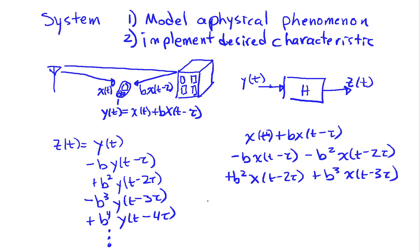And then when we have the b cubed term, we're going to have minus b cubed x of t minus 3 tau, plus, I'm sorry, that's minus b to the fourth x of t minus 4 tau. And that's probably enough to see the pattern here.